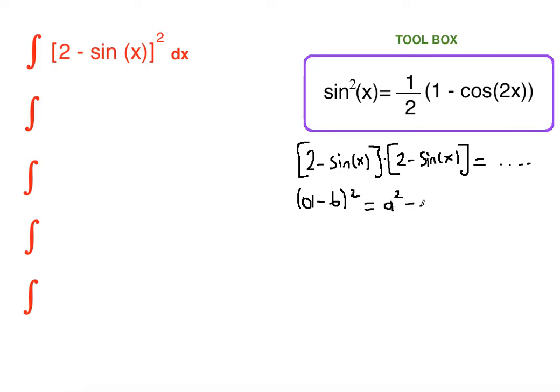Here our a term is 2, our b term is sin(x). So a² which is 2² is 4, minus 2 times a times b—2 times sin(x) times 2 is 4sin(x)—plus b² squared which is sin²(x).